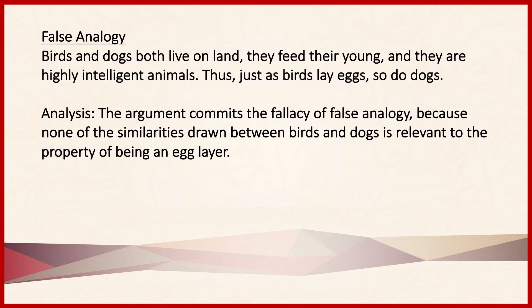The next fallacy is false analogy. An analogical argument is based on a comparison between two things. The presumption with false analogy is that the similarity between the two things compared is sufficient to support the conclusion being drawn. To evaluate it, you should be able to explain how the similarities aren't sufficient to justify the conclusion. For example: birds and dogs both live on land, they feed their young, and they are highly intelligent animals. Thus, just as birds lay eggs, so do dogs. In the analysis, you'd say none of the similarities drawn between birds and dogs is relevant to the property of being an egg layer.